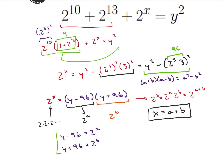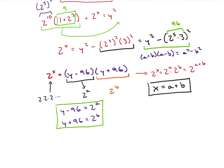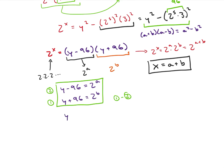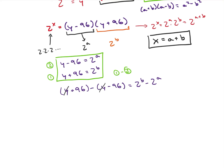Now I have a system of equations I can solve. I'll label them equation 1 and equation 2, and take equation 2 minus equation 1. That gives me (y plus 96) minus (y minus 96) equals 2 to the b minus 2 to the a. The y's cancel, leaving 192 equals 2 to the b minus 2 to the a. Now 192 equals 64 times 3, which is 2 to the 6 times 3.